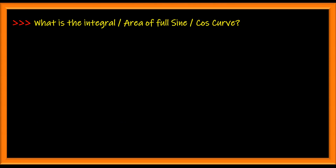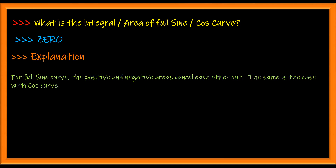What is the integral or area of a full sine or cosine curve? Zero. The sine and cosine full cycles have equal positive and negative areas, which makes the total area equal to zero.